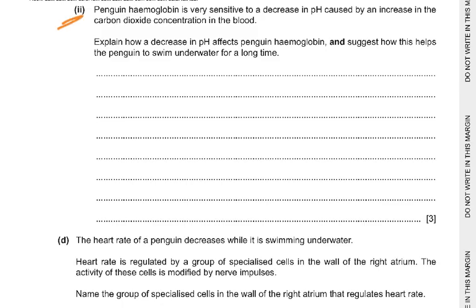Part 2D: Penguin hemoglobin is very sensitive to a decrease in pH caused by an increase in carbon dioxide concentration in the blood — this produces carbonic acid. Explain how a decrease in pH affects penguin hemoglobin and how this helps the penguin swim underwater for a long time. Oxygen can be released from hemoglobin to supply respiring tissues; more H+ ions bind to hemoglobin forming hemoglobinic acid, and hemoglobin's affinity for oxygen reduces. This helps aerobic respiration in muscle cells continue for longer, delaying anaerobic respiration and providing ATP for muscle contraction — this is the Bohr effect.